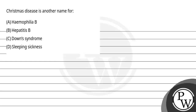Hello, kids. Let's read this question. The question says, Christmas disease is another name for. The question has asked which of the diseases given — A, B, C and D — is called Christmas disease? First, Haemophilia B. Second, Hepatitis B. Third, Down Syndrome. Fourth, Sleeping Sickness.